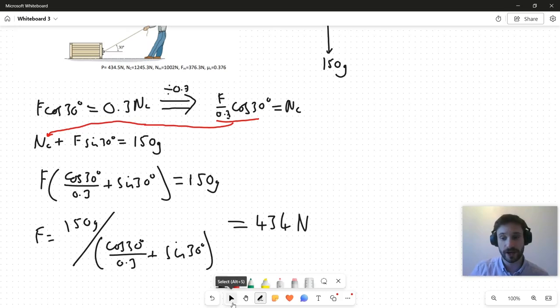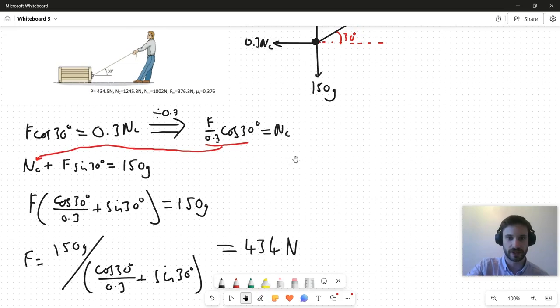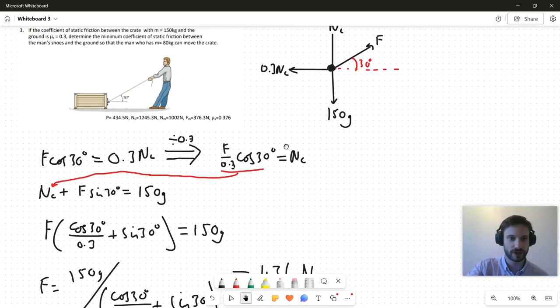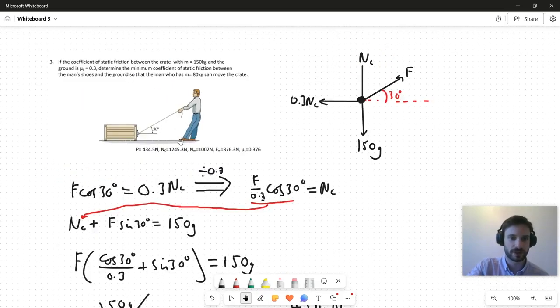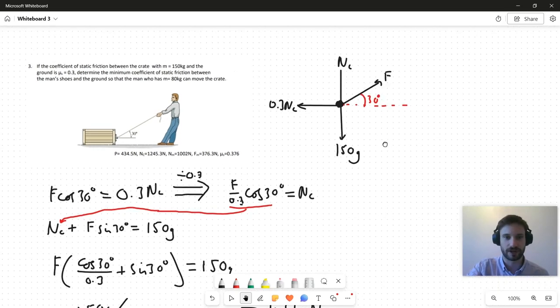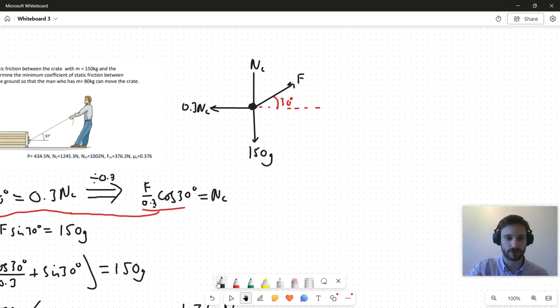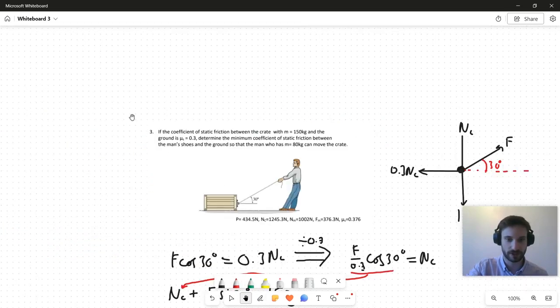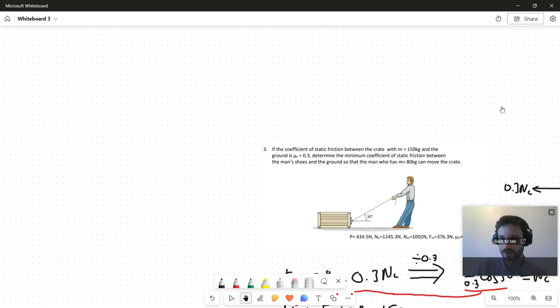Great, so I don't really need to solve for the normal force Nc, because the question is asking for the coefficient of static friction between this guy's shoes and the floor. This F force carries over to the free body diagram for the man, but this Nc doesn't, so it's kind of irrelevant. So I'm just going to move on and draw the free body diagram for the dude.